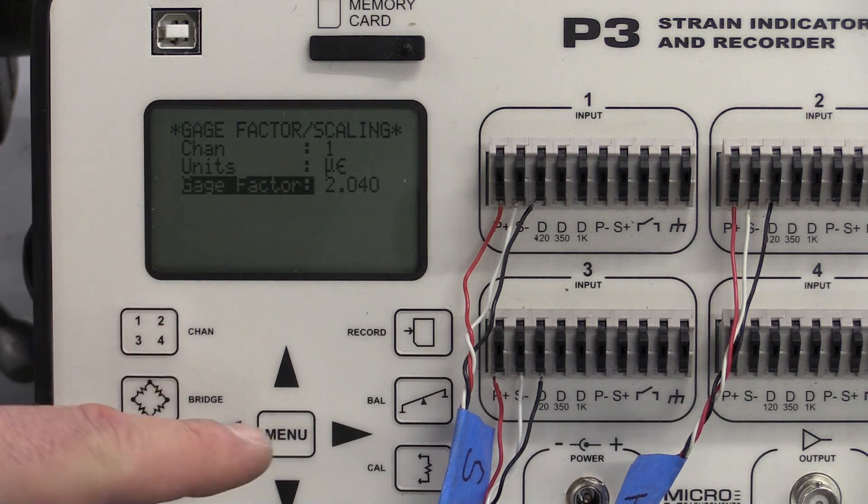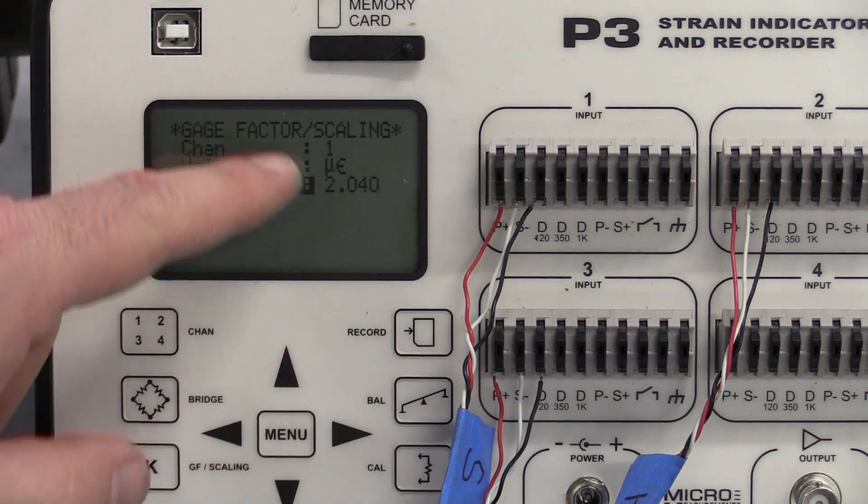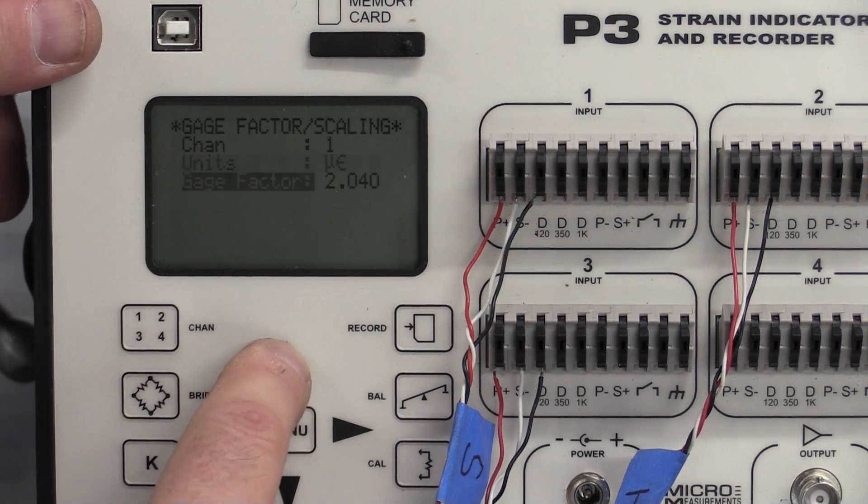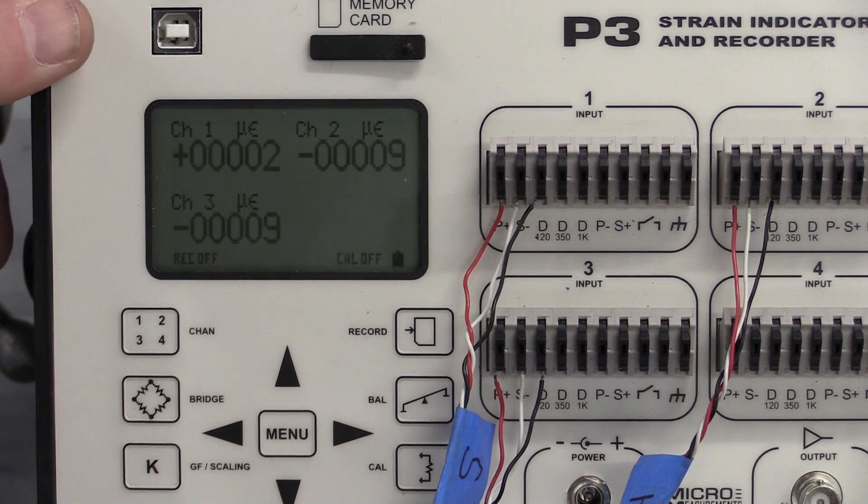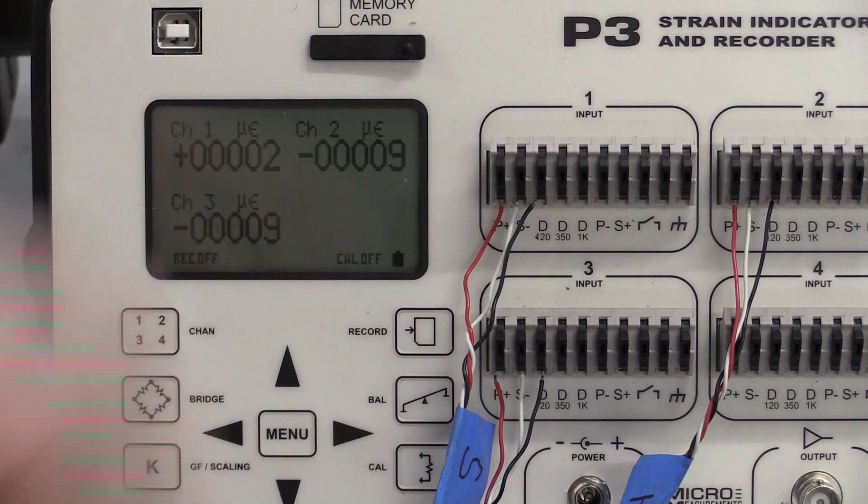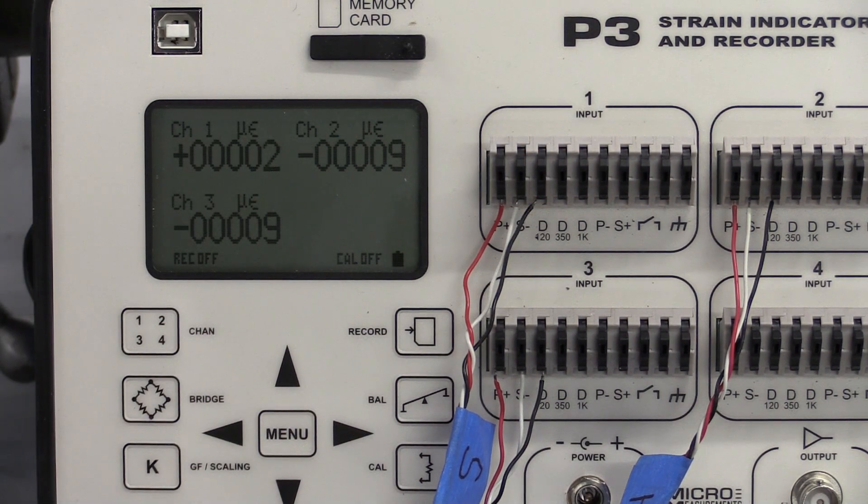And so we have these settings correct and once we get them all set for all the channels, so I would want to go up here and verify that channel 1, 2, and 3 all have the same settings. I can hit menu and now they're set. So this unit is now set up for all three samples.